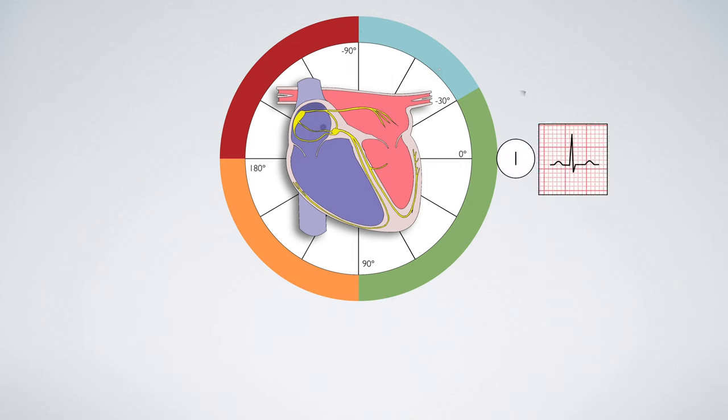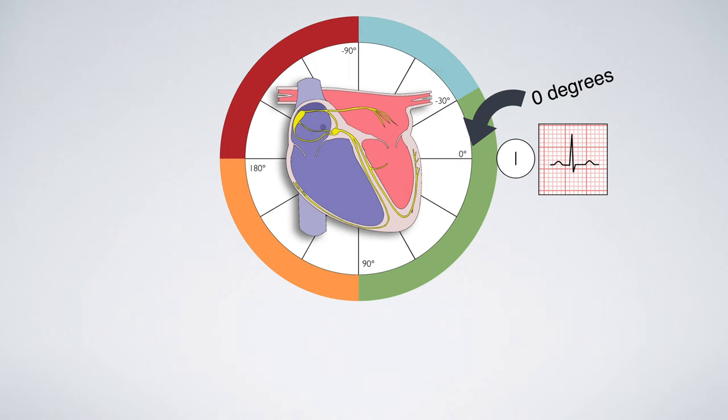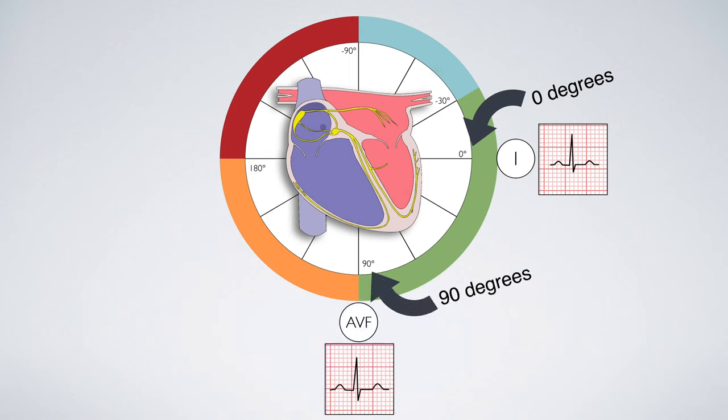This is all done in 30 degree segments and these segments correspond to our limb leads in the vertical plane. Now let's focus on our two key players. Lead one takes the perspective of electrical activity from reference point zero while lead AVF looks at it from 90 degrees.